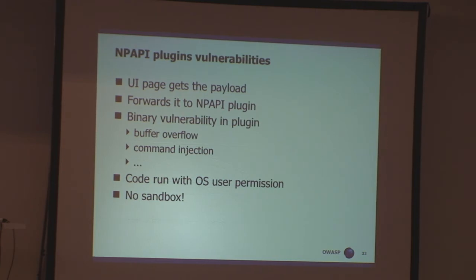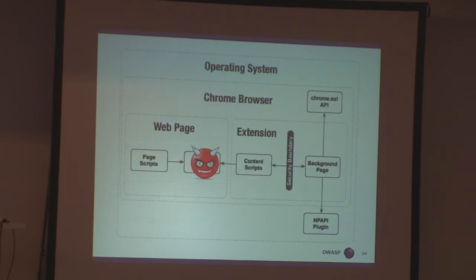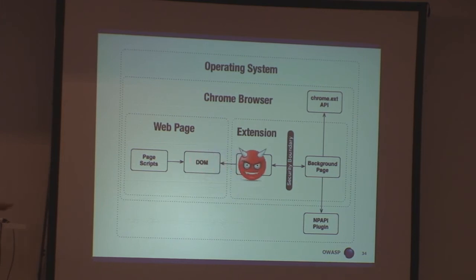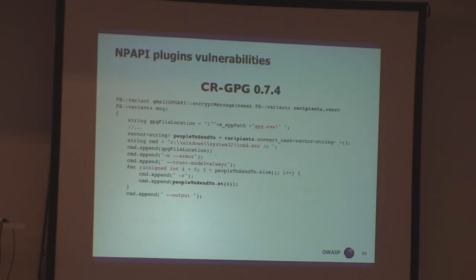Another thing: NPAPI plugin vulnerabilities. Some extensions can use binary code like DLL functions to implement functionality. There was an extension called CRGPG — an extension for proxying GPG into the Gmail interface. Binary code running in an extension runs outside any Chrome sandbox, with full permissions of your operating system user. If I found an extension with a vulnerable command injection vulnerability, the exploitation would look like this: a payload in the DOM is fetched by the content script, transferred to the background page, forwarded to the NPAPI plugin, and there the vulnerability executes code. I found an extension — CRGPG — which was vulnerable to that.